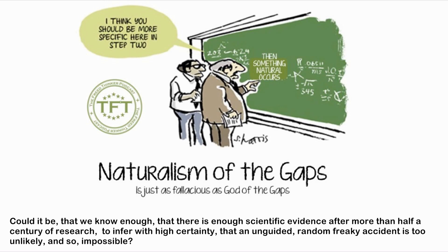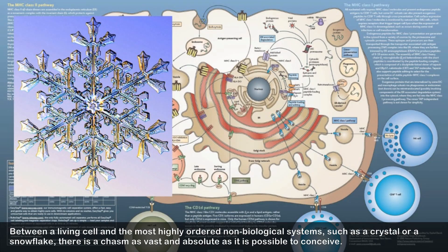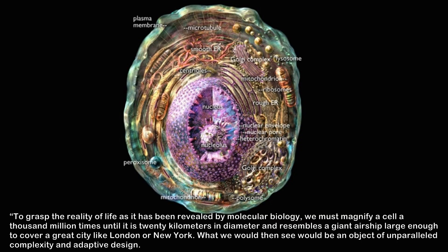Could it be that we know enough — that there is enough scientific evidence after more than half a century of research — to infer with high certainty that an unguided random accident is too unlikely and so impossible? Denton wrote in Evolution: A Theory in Crisis: we now know not only of the existence of a break between the living and non-living world, but also that it represents the most dramatic and fundamental of all the discontinuities of nature. Between a living cell and the most highly ordered non-biological systems such as a crystal or a snowflake, there is a chasm as vast and absolute as it is possible to conceive.